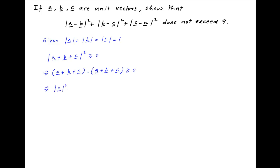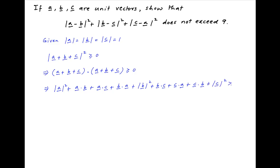Opening up the left-hand side, we get: |a|² + a·b + a·c + b·a + |b|² + b·c + c·a + c·b + |c|² is greater than or equal to 0.